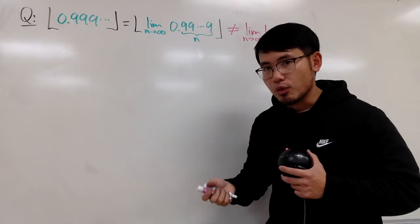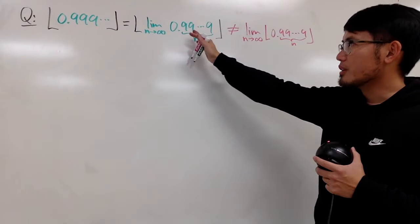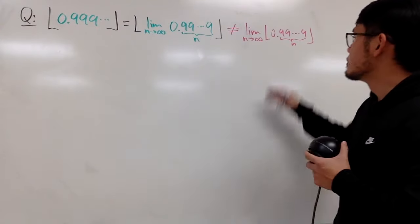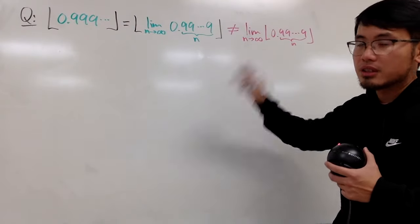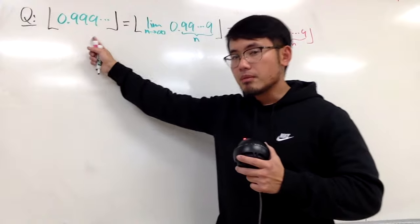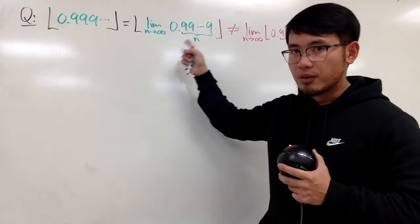You are doing the limit first inside of the floor function, and then you are going to figure out the answer, and you do the floor function. This right here is you do the floor function first, and you do the limit. There are two different things. And because it was written like that, so it's the first interpretation.